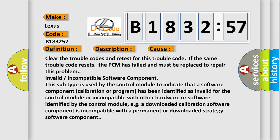Invalid or incompatible software component. This subtype is used by the control module to indicate that a software component calibration or program has been identified as invalid for the control module or incompatible with other hardware or software identified by the control module, e.g., a downloaded calibration software component is incompatible with a permanent or downloaded strategy software component.